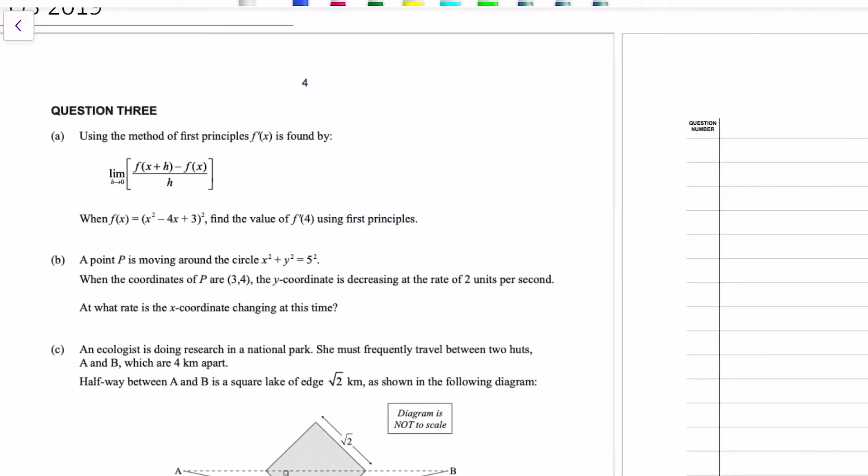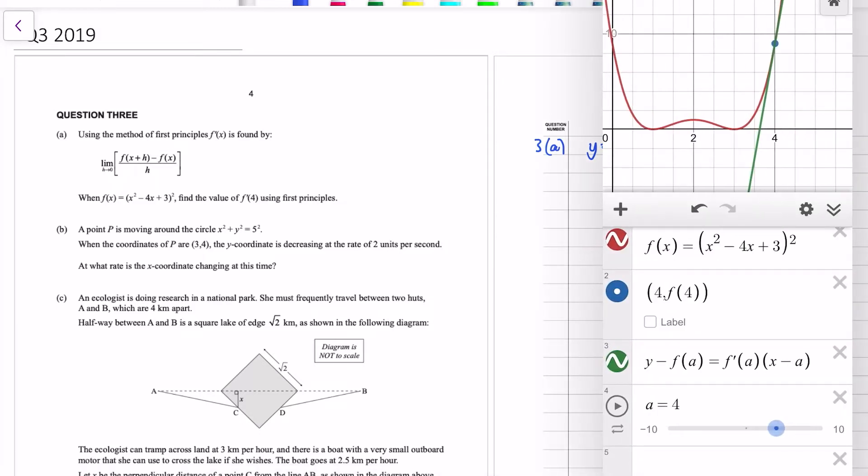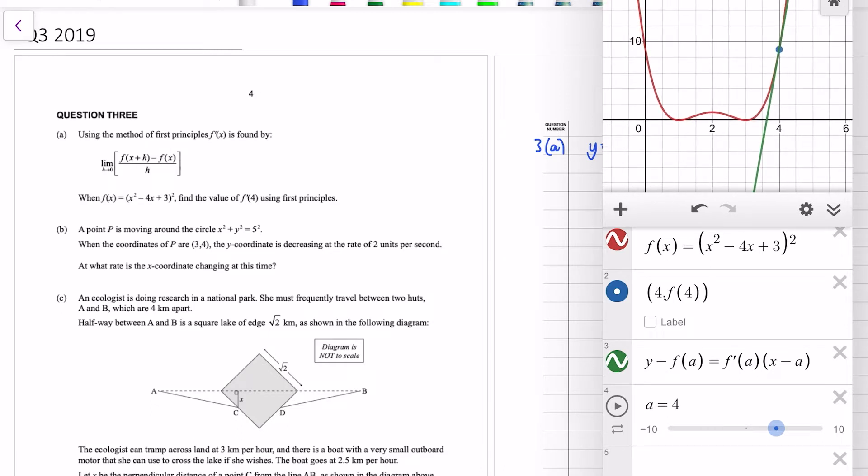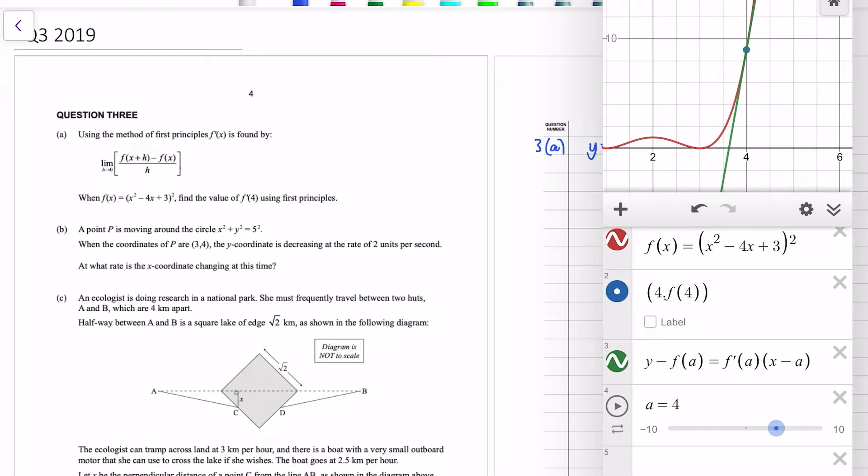Question A. The first thing to get my head around this question is to have a look at the function. As I've been saying in a lot of these videos, if you've got a graph it pays to actually have a look at it. So we've got x squared minus 4x plus 3, all squared. So I've made a graph on Desmos already. So we've got a quartic equation there, two turning points. And we're looking at finding the value of the slope f dash at the point 4. So I've currently got that in there. I've got a tangent drawn at the point x equals 4.